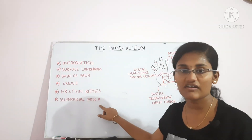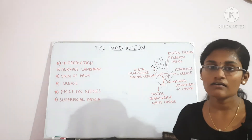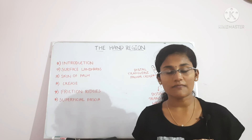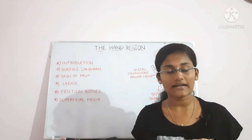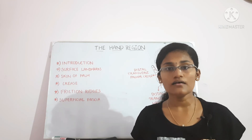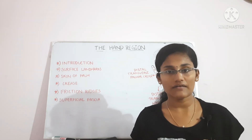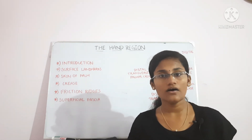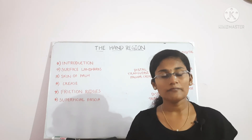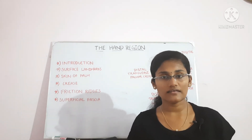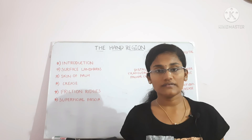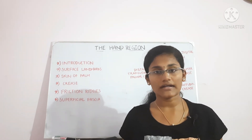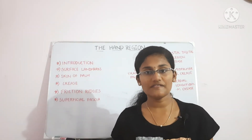The superficial fascia of the hand is made up of fibrous bands that bind it to the deep fascia. It has two important structures: the superficial muscle palmaris brevis, present on the medial or ulnar side of the hand, and the superficial metacarpal ligament. The superficial fascia thickens at certain points to form the superficial metacarpal ligaments, which are present across the root of the fingers.